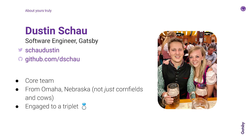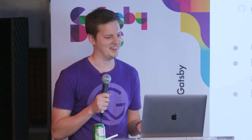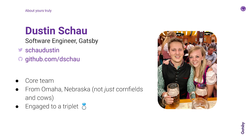My name is Dustin, as some of you may know. I work on the Gatsby core team, the open source product. I'm from Omaha, Nebraska, which is kind of a city — it's not just cornfields and cows. A fun fact about me is I'm engaged to a triplet, which is that one over there. That's Maggie and I at Oktoberfest.